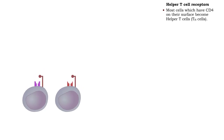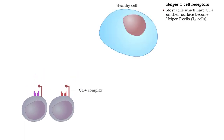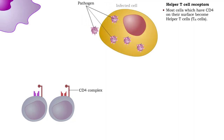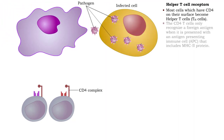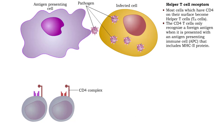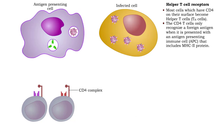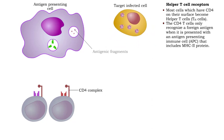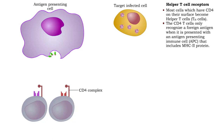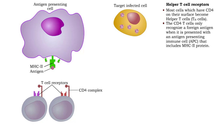Most cells that display CD4 become helper T cells. CD4 T cells can only recognize foreign antigens when they are presented in conjunction with major histocompatibility complex, or MHC class II molecules. These protein molecules are only found on certain immune system cells called antigen presenting cells.